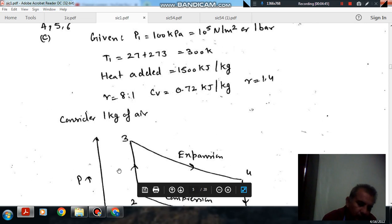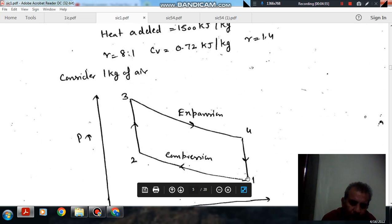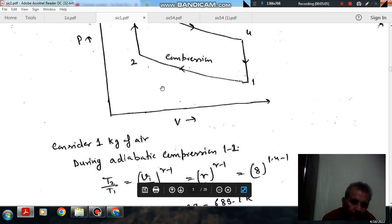And because in Otto cycle, the compression ratio is 8:1. So, the volume V1 by V2 is 8. So Cv is 0.72 kJ per kg K and gamma is 1.4.